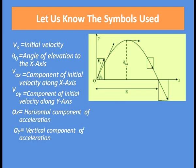We can characterize the initial velocity of an object in projectile motion by its vertical and horizontal components. Let us take the positive x-axis in the horizontal direction and the positive y-axis in the vertical direction. Let us assume that the initial position of the projectile is at the origin O at t equals 0, so the coordinates are x equals 0 and y equals 0.